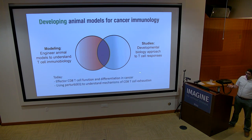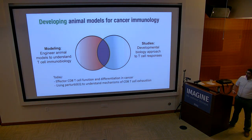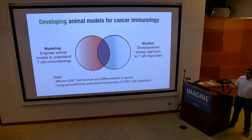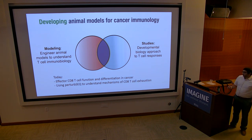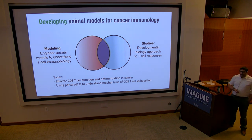Today I'm going to talk a little bit about our published work on CD8 T cells and their differentiation in cancer. That's mostly to set up what I'll talk about for the majority of the talk, which is an unpublished set of work where we're using a technique called PerturbSeq to knock out transcription factors in CD8 T cells and understand how this affects trajectories of differentiation and function of those cells — and then a surprise of how that also affects whether a cell becomes exhausted.